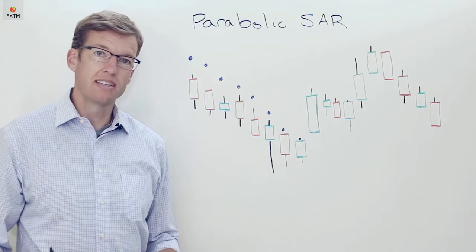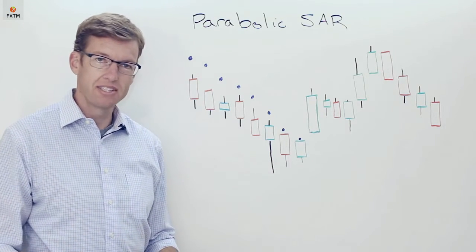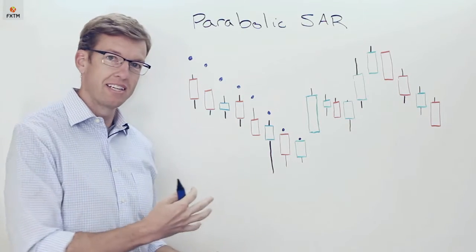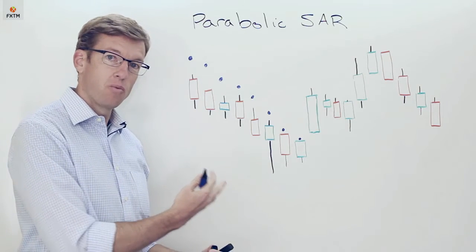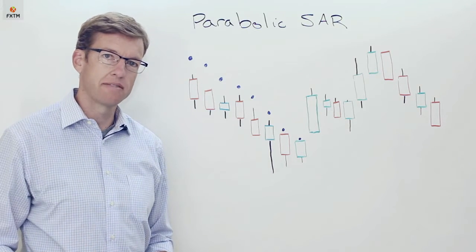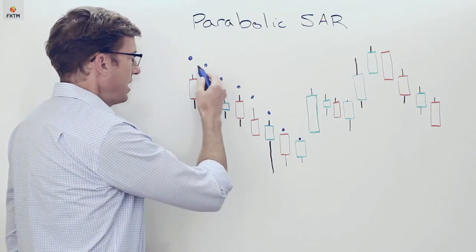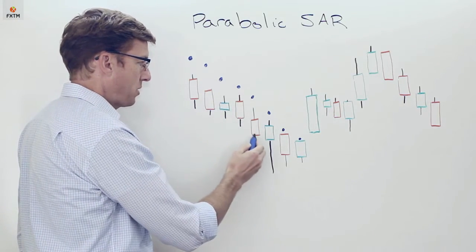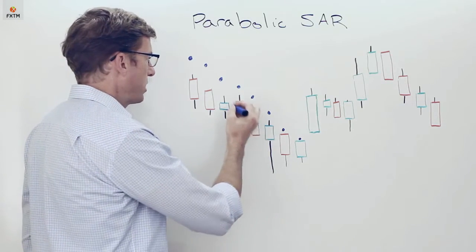It's easier to show how this indicator works than it is to describe it. So let's look at a generic example that I've drawn here on the whiteboard, and then we'll take a look at some real-life examples on the charts. The parabolic SAR, when it's set above the price chart in the case of a downtrend, is used to identify where the trend might have reversed.